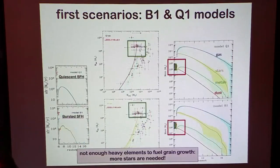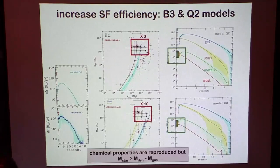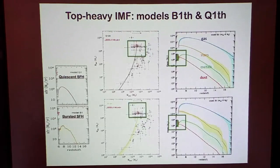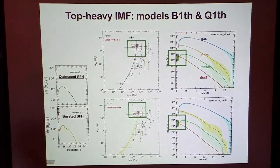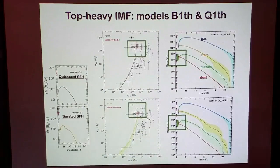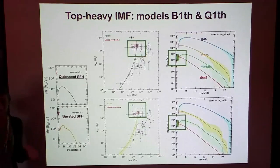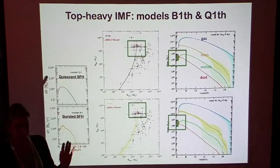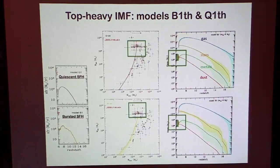Another way to get around this was to change the IMF. If you want, for the same stellar mass, an increased amount of metals, we tried this — showing predictions for a quiescent and a bursty star formation rate with a top-heavy IMF. You can now fit both the dynamical mass constraint and the chemical constraints, but you have to increase the characteristic stellar mass from 0.35 solar masses to 5 solar masses — quite a top-heavy IMF, which may not be totally unreasonable in these very extreme environments, but still requires tuning.